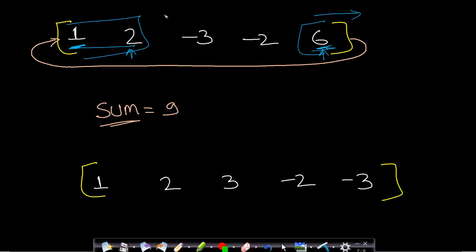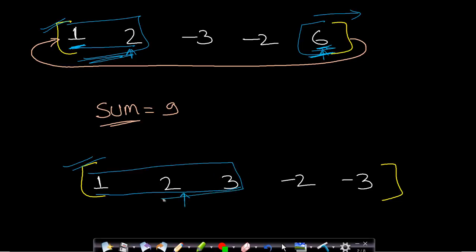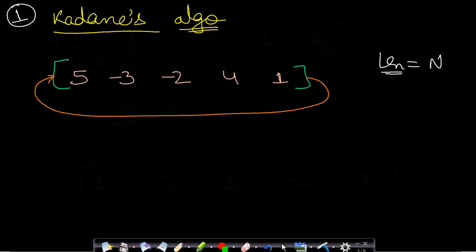There can be two situations for this maximum sum subarray. In the first case, some part lies at the right end and some part lies at the left end of the array — a wrap-around scenario. In the second case, the maximum sum subarray like one, two, three is totally contained on one side, with no wrap-arounds. These are the two cases possible.